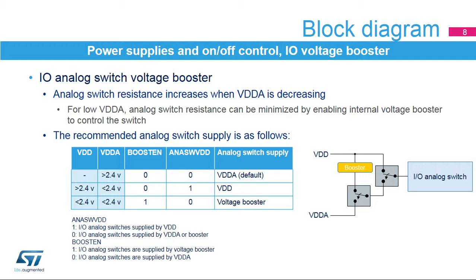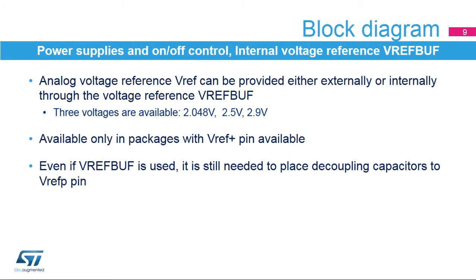The recommended supply for the analog switch is to use VDDA. But when VDDA is lower than 2.4V and VDD is larger than 2.4V, the power supply can be switched to VDD. If both VDDA and VDD are lower than 2.4V, the voltage booster should be enabled. It is possible to provide the internal reference voltage VREF internally using the VREF buff. Three voltage levels are available, but this can only be used when there is a VREF pin in the package, i.e., all packages except the 32-pin STM32G4 UFQ FPN32 and LQFP32 packages.